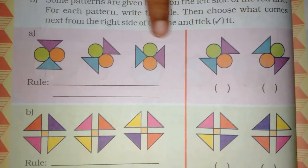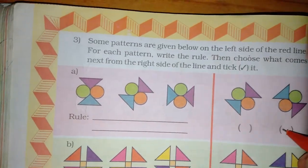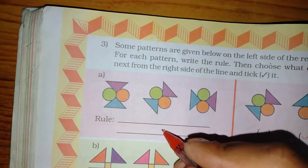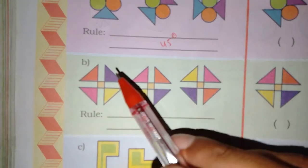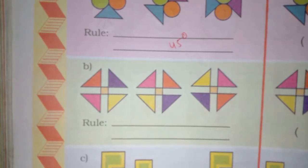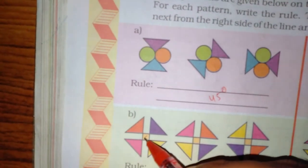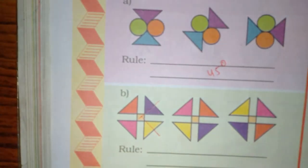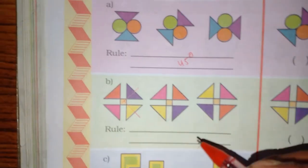Now, where are you going? Here. Here. How many degrees? 45. Now, this one is blue. 90. How many degrees? 90. How many degrees? 90.